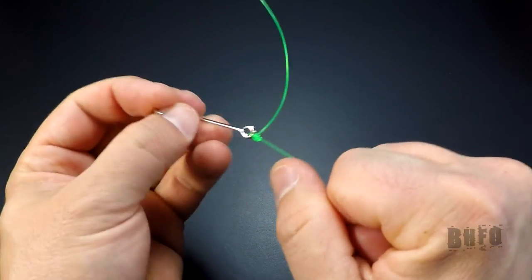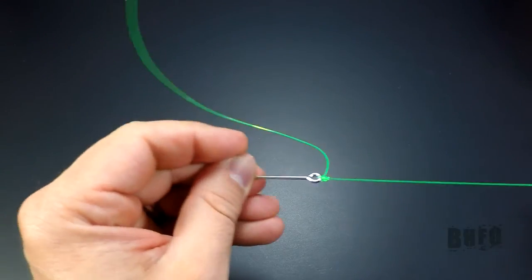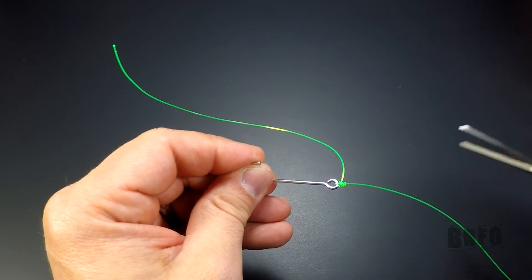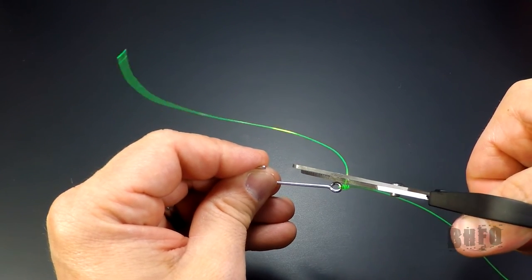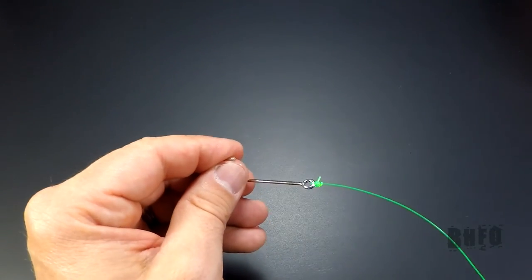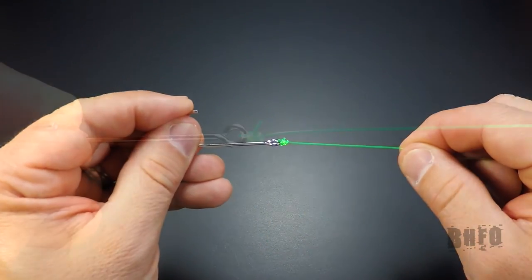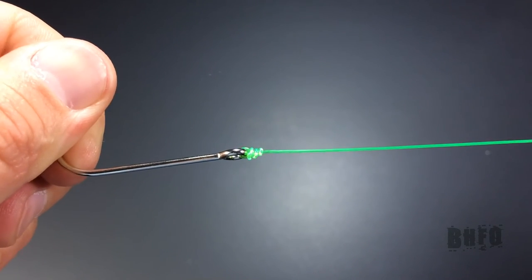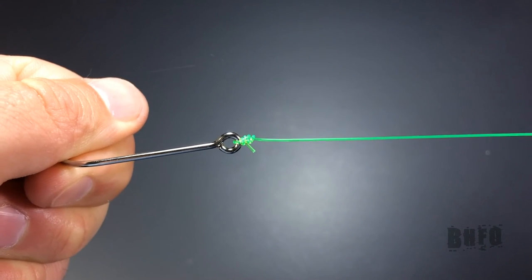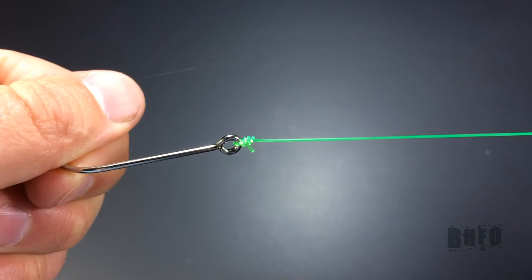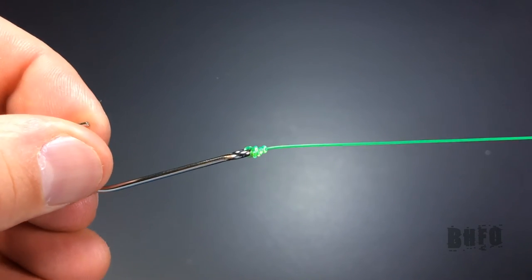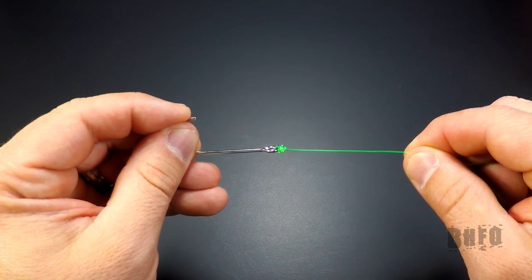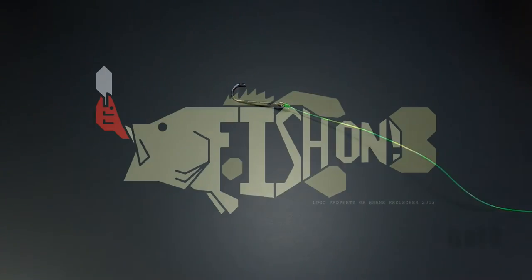Now trim the tag a little less than a quarter inch. This is what it should look like. You just learned how I tie the improved clinch knot. Thanks for watching, and as always, fish on!